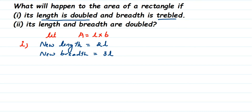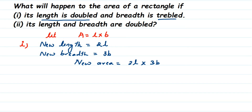So length and breadth are different here. Normally length and breadth are l and b, but they have changed. If length is changed to 2l and breadth is changed to 3b, then the new area will be new length into new breadth, which is 2l into 3b. Multiplying the numbers: 2 into 3 is 6, and we have l into b — which is nothing but A.